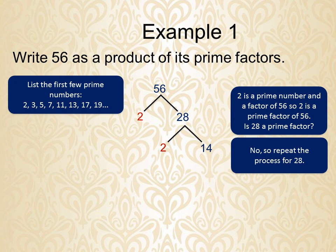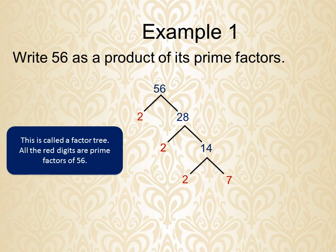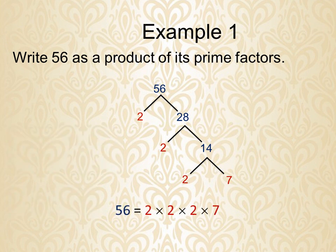2 × 14 = 28. Again, 2 is prime, so we continue with 14. 2 × 7 = 14. This completes the factor tree. All the circled digits are the prime factors of 56. The last number is 7, which is a prime number. So 56 = 2 × 2 × 2 × 7.